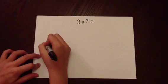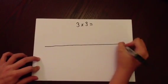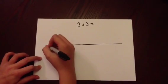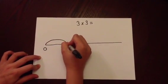We draw the empty number line and put zero at the beginning. The first number in the multiplication sum tells us how many jumps we need to do. So 3 times 3 is 3 jumps.